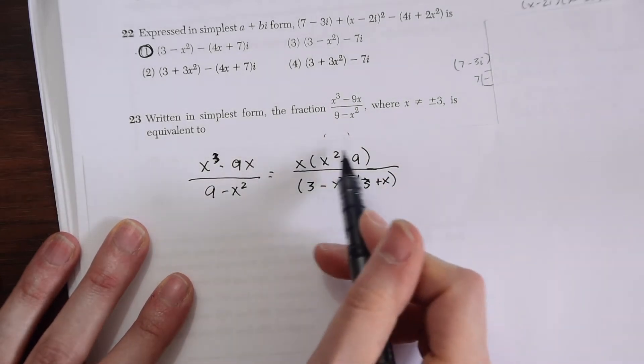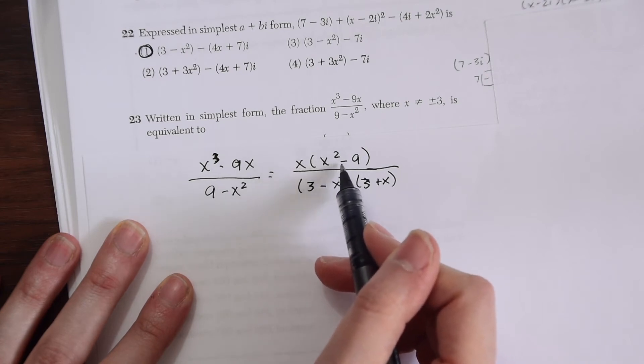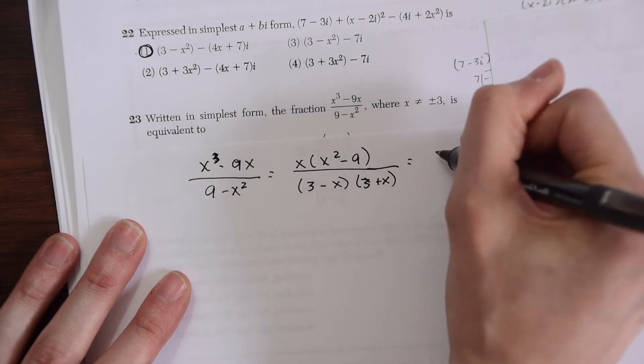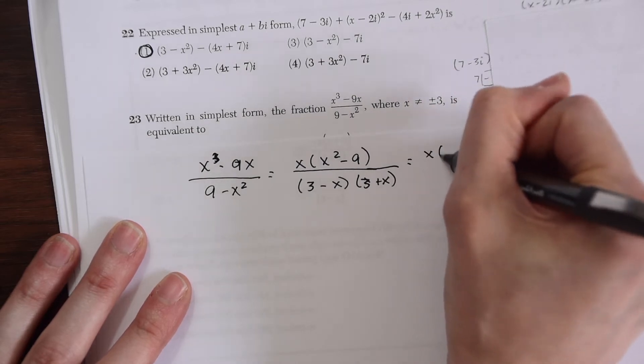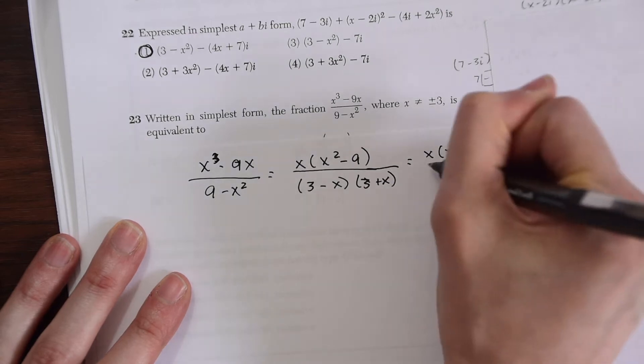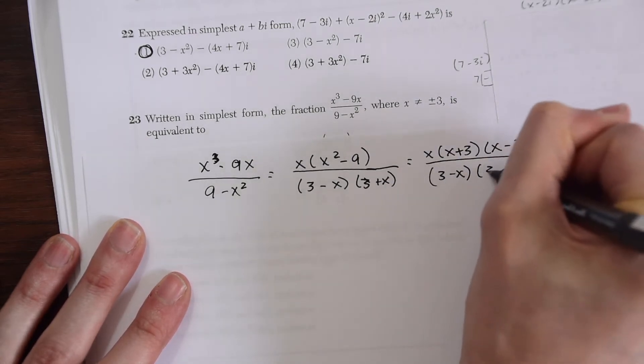Up here we can do a difference of two squares again on the numerator because we have x squared minus 9, we have two perfect squares and a subtraction sign. Everything we need to do difference of two squares. We have x times x plus 3 times x minus 3 all over 3 minus x times 3 plus x.